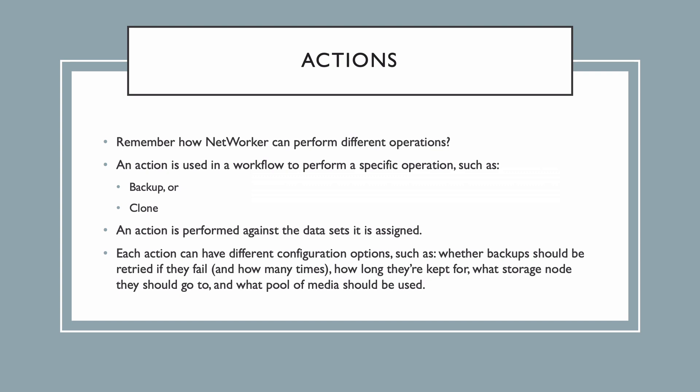In part two, I described how Networker can perform different operations like backup, clone, and so on. An action is a specific part of a workflow that performs a specific operation, such as a backup, against the data sets that it is assigned to. That action can have a lot of different configuration options, such as whether to retry a backup if it fails, how long the backup should be kept for, what storage node the backup should be directed to, and what pool the backup should go to, and so forth.